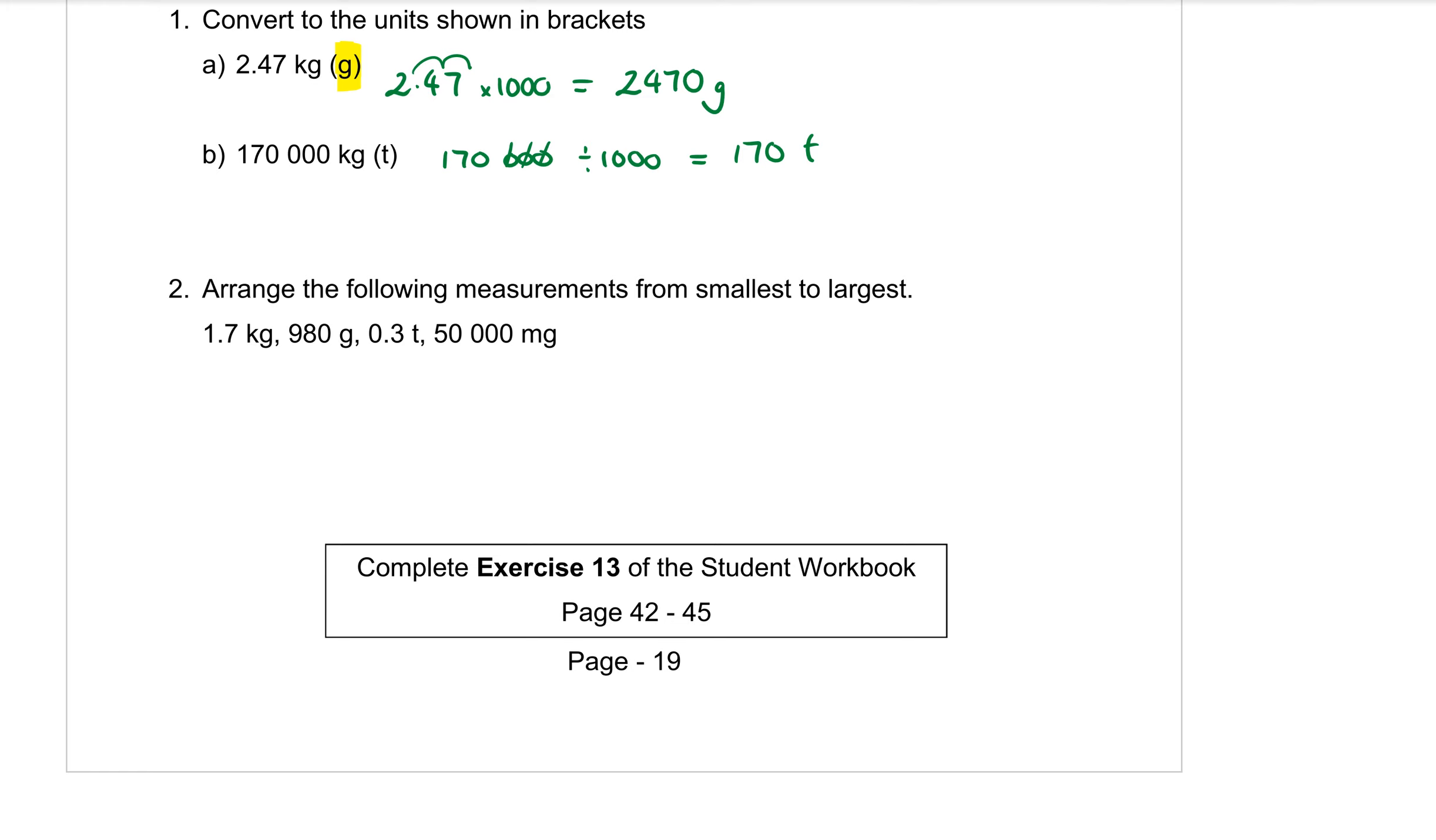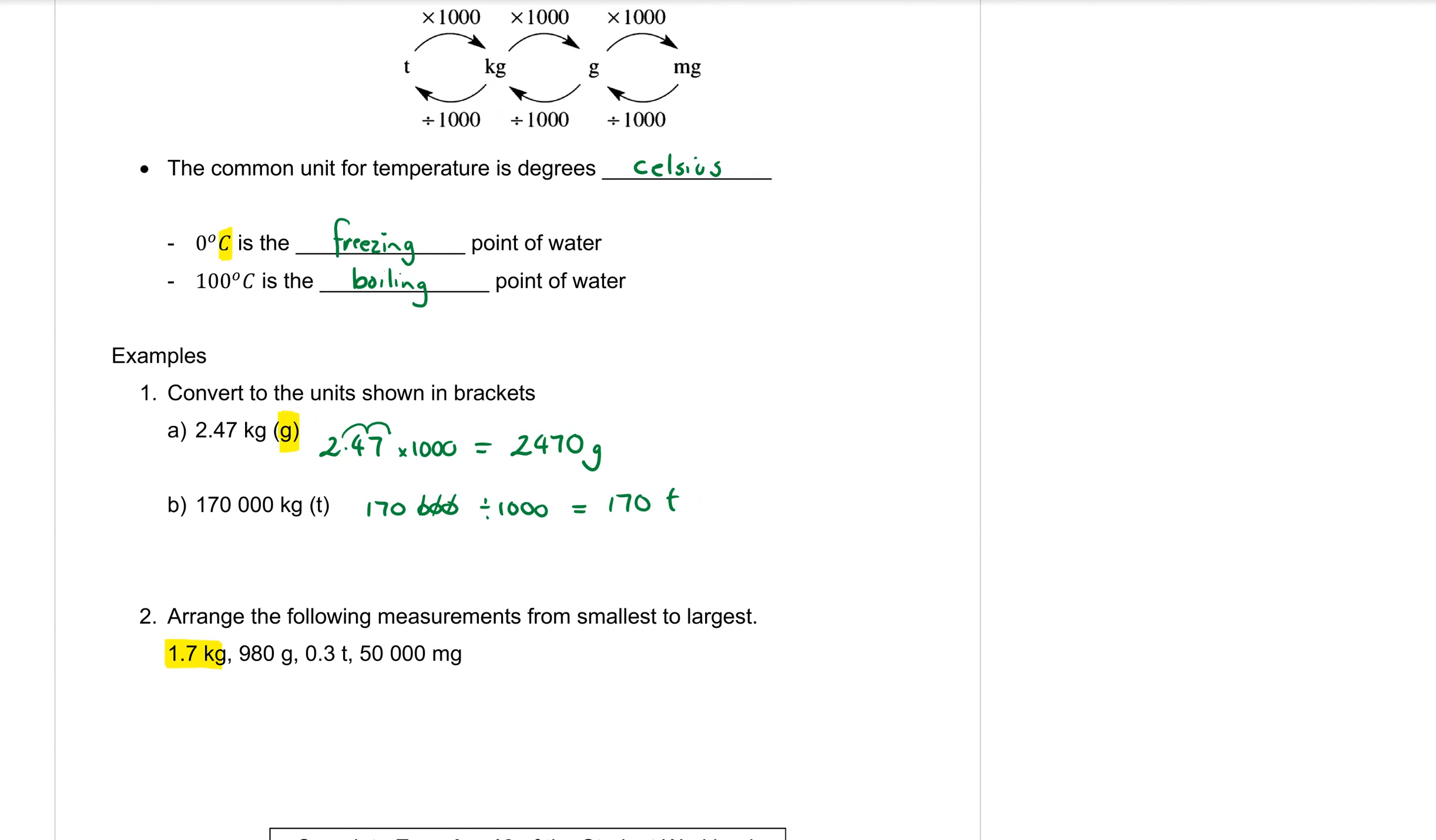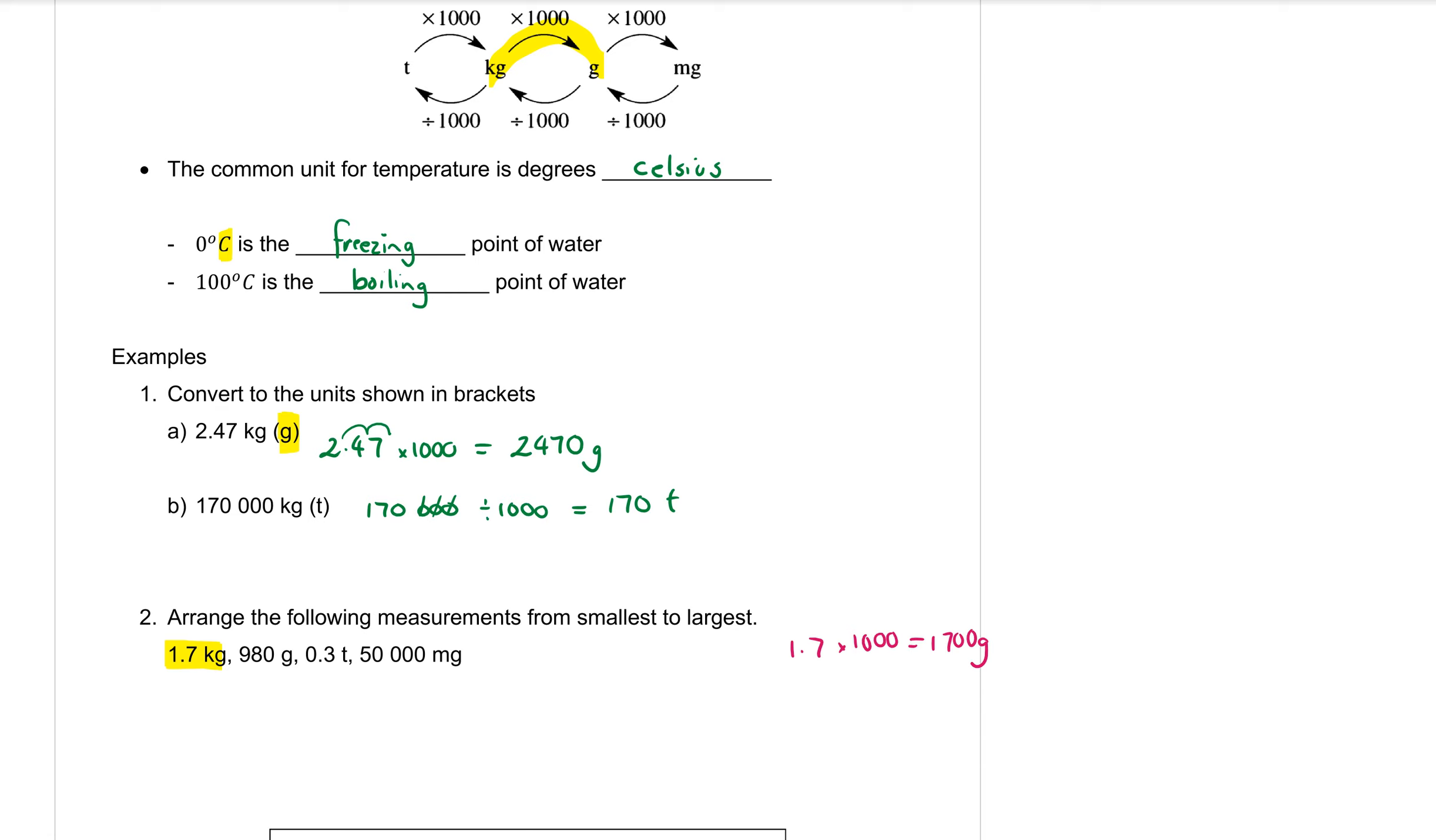Let's start with this first one, 1.7 kilograms. If I want to change that into grams, kilograms to grams I want to times it by 1000. So over here on the side I'm going to go 1.7 times a thousand and that is equal to 1,700 grams. Now I'm going to take the second one, 980 grams. That's already in grams I don't have to convert that one.